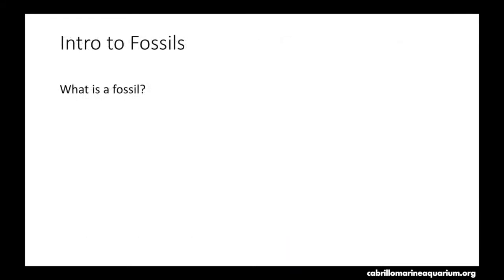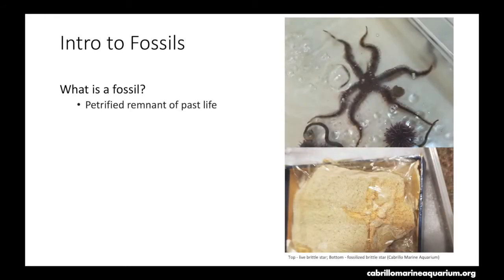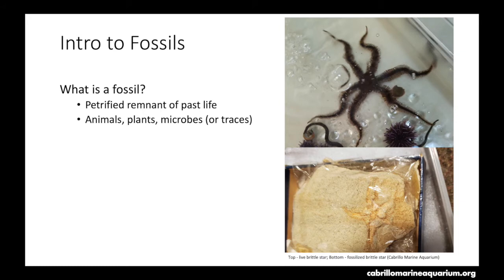Now that we've talked about some of the geology fundamentals, let's get into fossils. What is a fossil? Fossils are petrified remnants of past life. These remnants can come from animals, plants, microbes, and even be a trace from these organisms. For an animal, it could be the entire animal, their teeth, a skull, a vertebrae, a hoof.